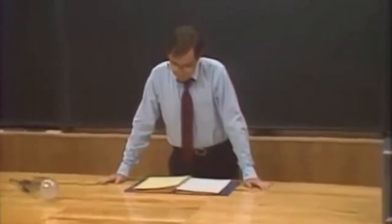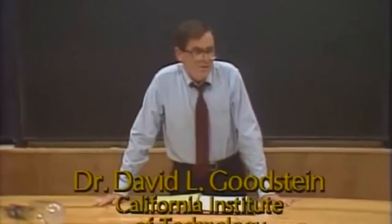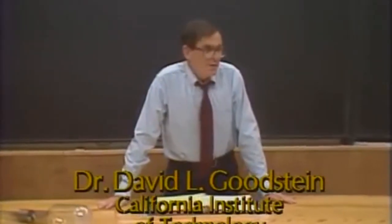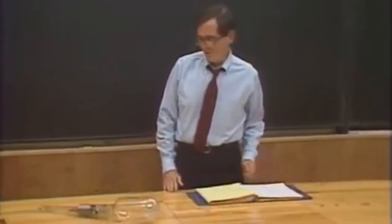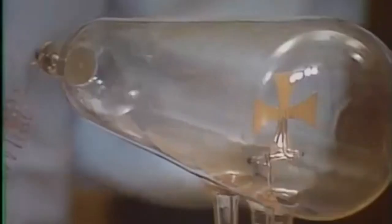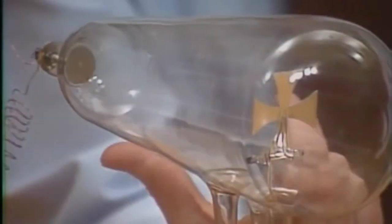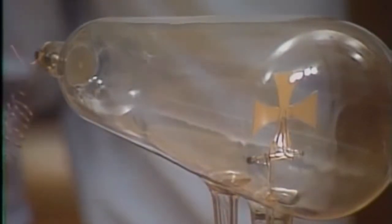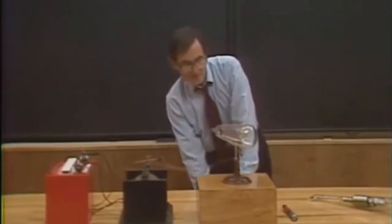The cathode ray tube was invented in the middle of the 19th century. Of course, it eventually became the modern television tube. But before that misfortune, it actually served a useful purpose that I'd like to tell you about. Here is a particularly simple cathode ray tube. It consists of an evacuated glass tube with two electrodes inside. I'm going to apply 20,000 volts across those two electrodes. But first, I have to turn out the lights so you can see what happens.